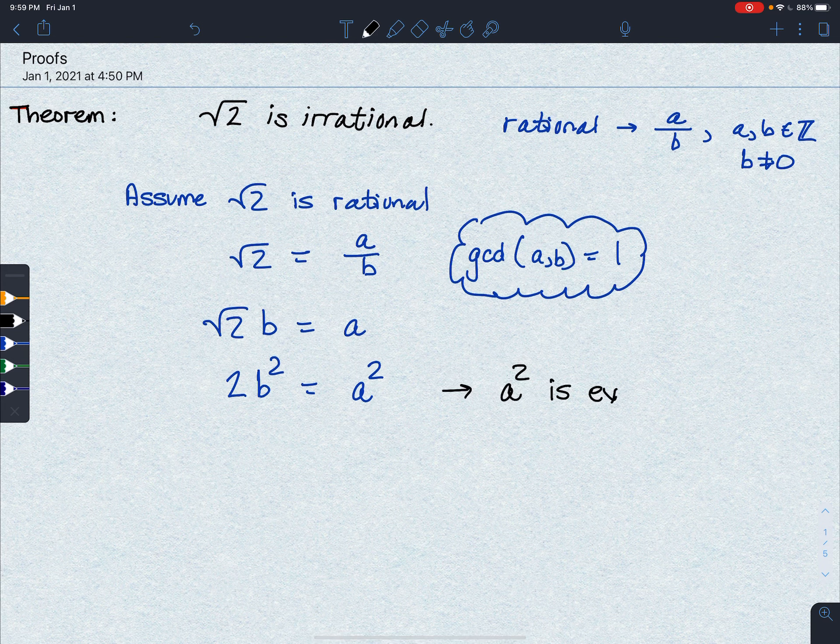Therefore, the square root of 2 is not rational. Because when we try to say that it's rational, we get a bunch of nonsense. So there is a proof that the square root of 2 is not rational or, as we say, irrational.